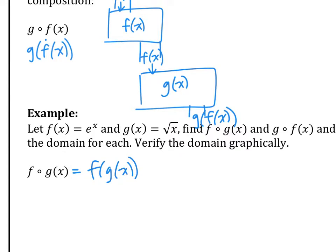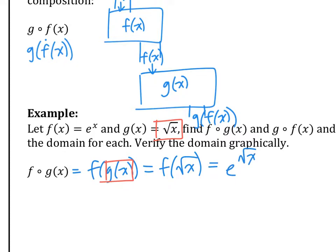Whatever was g is now a domain that goes into f. So whatever was g — g was square root of x — it goes in as a replacement. When we have f of something, that something always replaces x. So this something goes into the x part of f, giving us e to the square root of x. So the composed function is e to the square root of x — you just do that. Now the harder part is checking the domain.